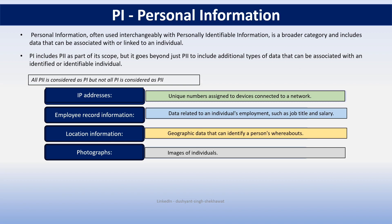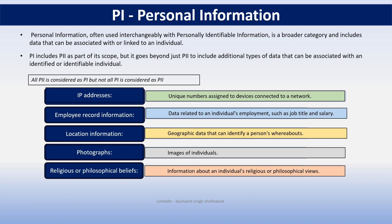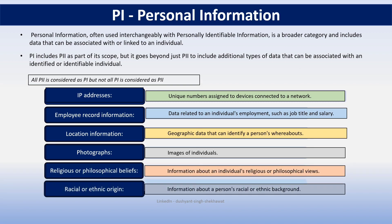There are other examples which are PI but not PII, like your political opinions, your religious beliefs, your sexual orientation. These are your personal information, but unless they are combined with other information, they do not identify you. So that's why all PII is PI, but not all PI is PII. As we move forward, I will give more insight on PI and PII so you will get more understanding of the relationship between them.